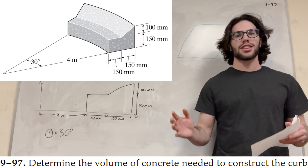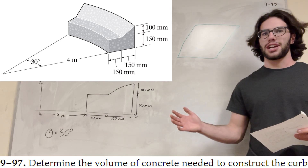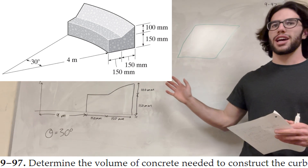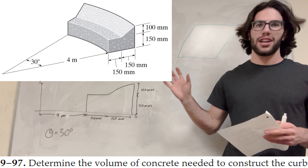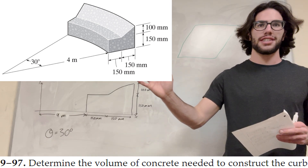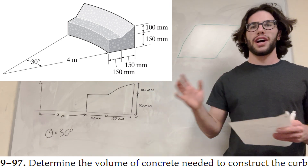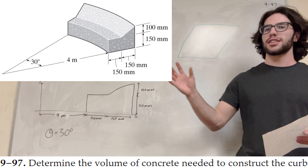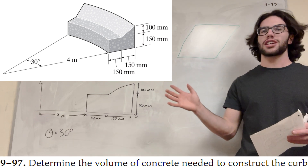What's up Kyle gang? So we've got this statics problem here. We have this shape and we're going to rotate it 30 degrees, and we want to find the volume that that extension is going to be.